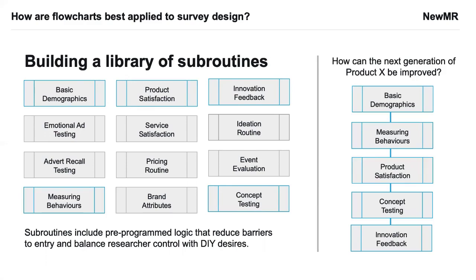Potentially going forward, as a self-service user of survey design, that would allow a self-service stakeholder to create a very good research survey in a quicker timeframe. In front of us we have a library of subroutines — a basic demographic subroutine, a product satisfaction block, a service satisfaction block, a pricing routine, and a concept testing routine. Here's an example: the ones in blue we've taken from the subroutine library — basic demographics, product satisfaction, innovation feedback, concept testing, and measuring behaviours — and we've put them on the right into our basic survey overview, so we can see the overview in its subroutines and then zoom into each one to explore the flowchart in more detail.